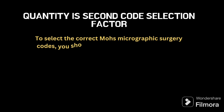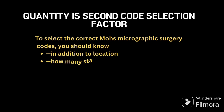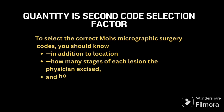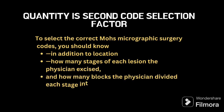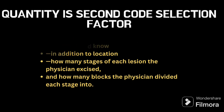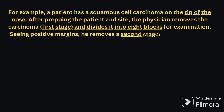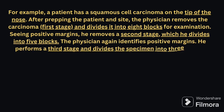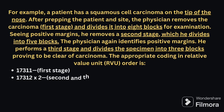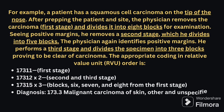Now we will enter into the example. Keep in mind: first, location; second, how many stages of lesions are removed; third, how many blocks are divided from each stage. In this example, the patient has squamous cell carcinoma and the location is the tip of the nose. From the nose: the first stage is divided into eight blocks, the second stage into five blocks, and the third stage into three blocks.